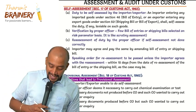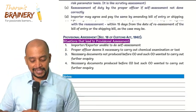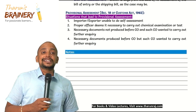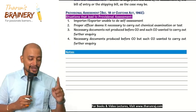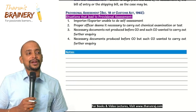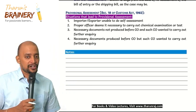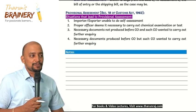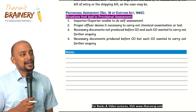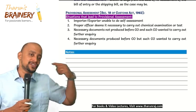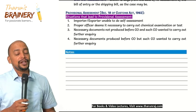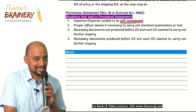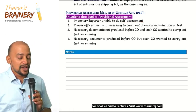Under Section 18 we have provisional assessment. Under GST, provisional assessment is only in one case — where the registered person is unable to determine the value or the rate of tax. Under customs, when the importer or exporter is unable to do the self-assessment, that point is common between GST and customs. But under customs we have three extra situations beyond that common point.